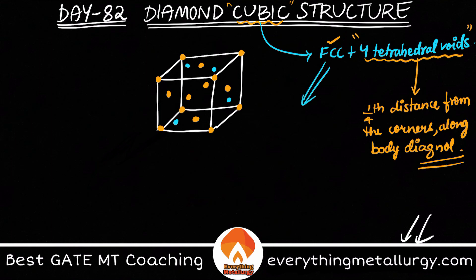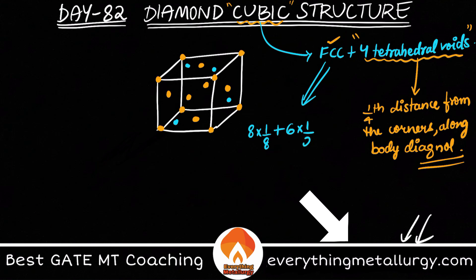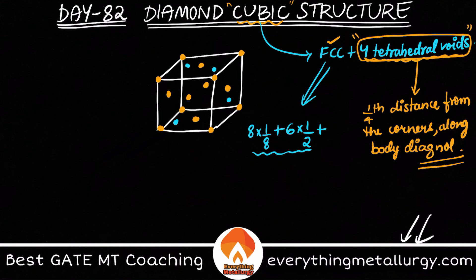Now, what is the total number of atoms? In FCC we have 8 corners with a contribution of 1/8 each, and 6 face center atoms with a contribution of 1/2 each. Along with that, we have these 4 extra atoms in the tetrahedral voids.